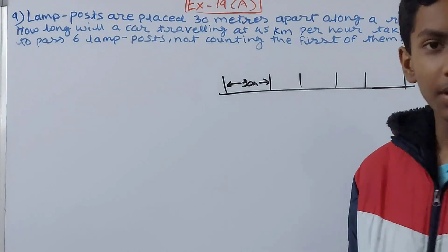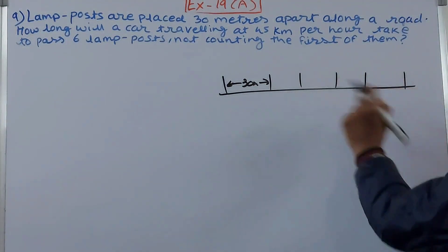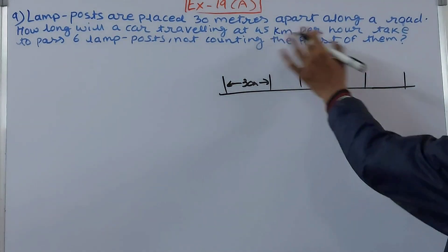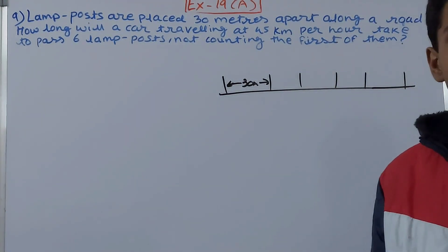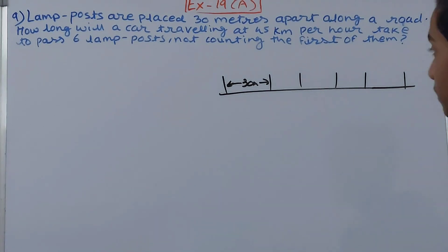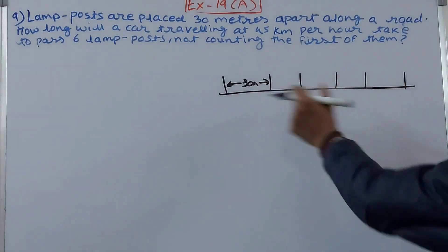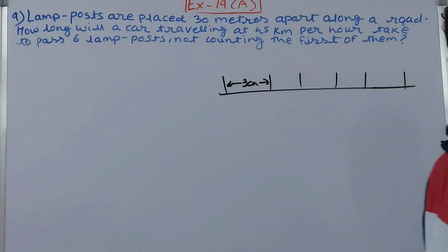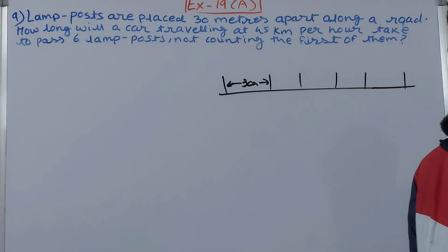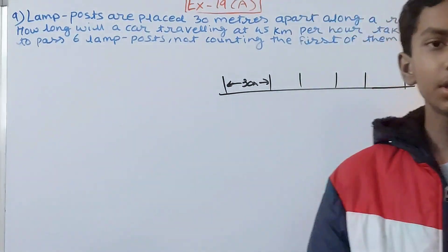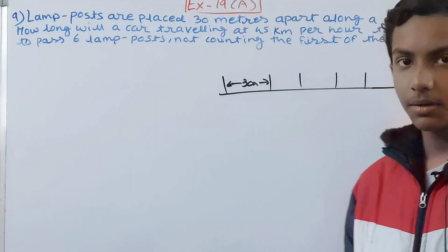Now, a car is coming on this road traveling at a speed of 45 kilometers per hour. The question asks how much time it will take for the car to cross from one end to the other. One condition here is that the first lamp post is not counted.